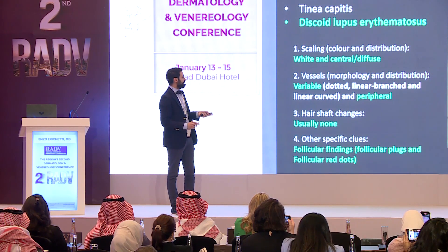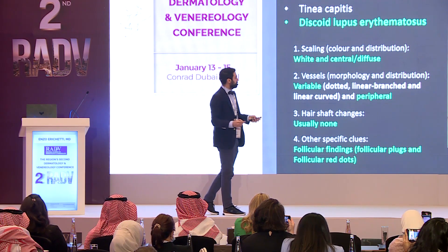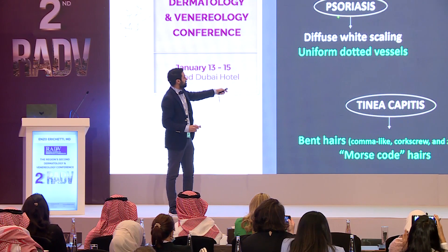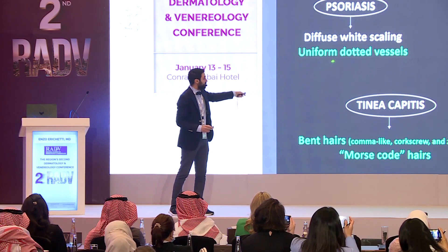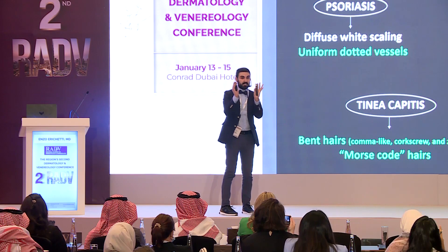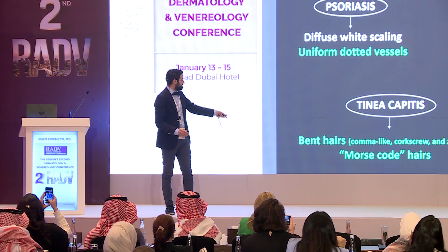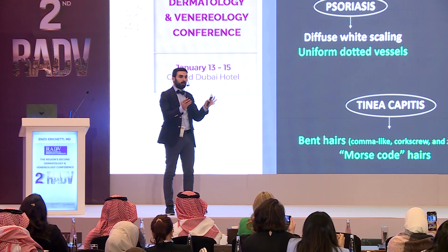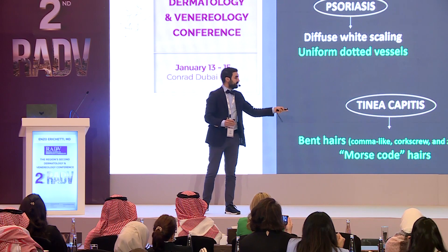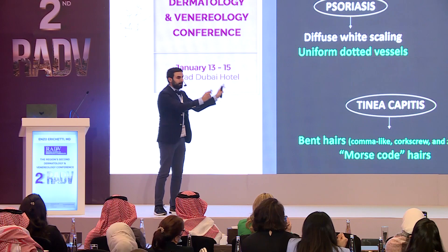Summary: psoriasis — uniform dotted vessels and diffuse white scales. Seborrheic dermatitis — yellow scales and linear branching vessels. Tinea capitis — bent hairs, especially corkscrew-like and comma-like hairs, and Morse-code-like hairs. Discoid lupus — follicular plugs. Let's remember these findings.